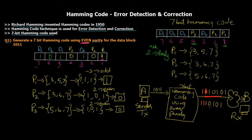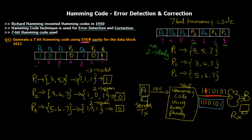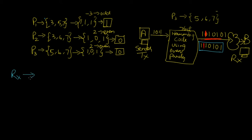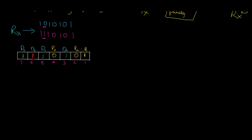The receiver has got 1110101 instead of the correct 1010101 — the bit at position 6 got flipped. The receiver now has to perform error detection and correction. He writes down the received code with seven blocks and marks the flipped bit. He doesn't yet know which bit is faulty, but will find out using Hamming code error detection.